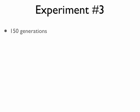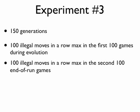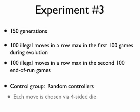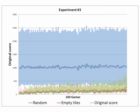But maybe the controllers in experiment one just needed more room to make illegal moves. So for the final experiment, I allowed the controllers to make 100 illegal moves in a row before losing in both sets of trial games. In this case, the original score fitness function again proved slightly more effective than the empty tiles fitness function, but both sets of controllers significantly underperformed relative to their random controller counterparts.